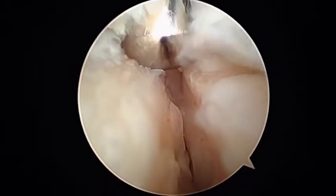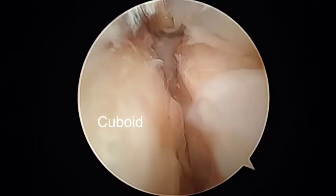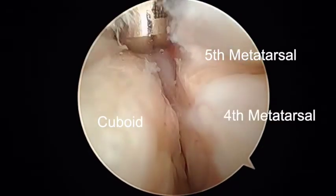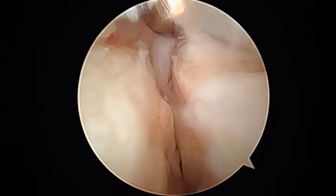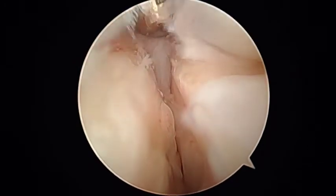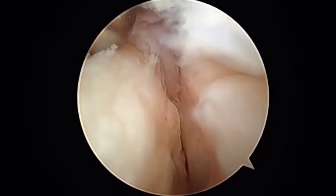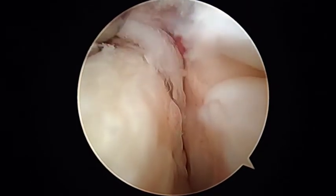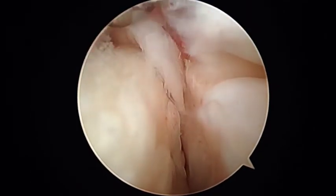As we advance laterally, you can see the cuboid on the left and the 4th and 5th metatarsal base on the right, as well as the articulation between the 4th and 5th metatarsal base. Here you can see debridement of a meniscoid-type lesion within the 5th tarsometatarsal joint space.